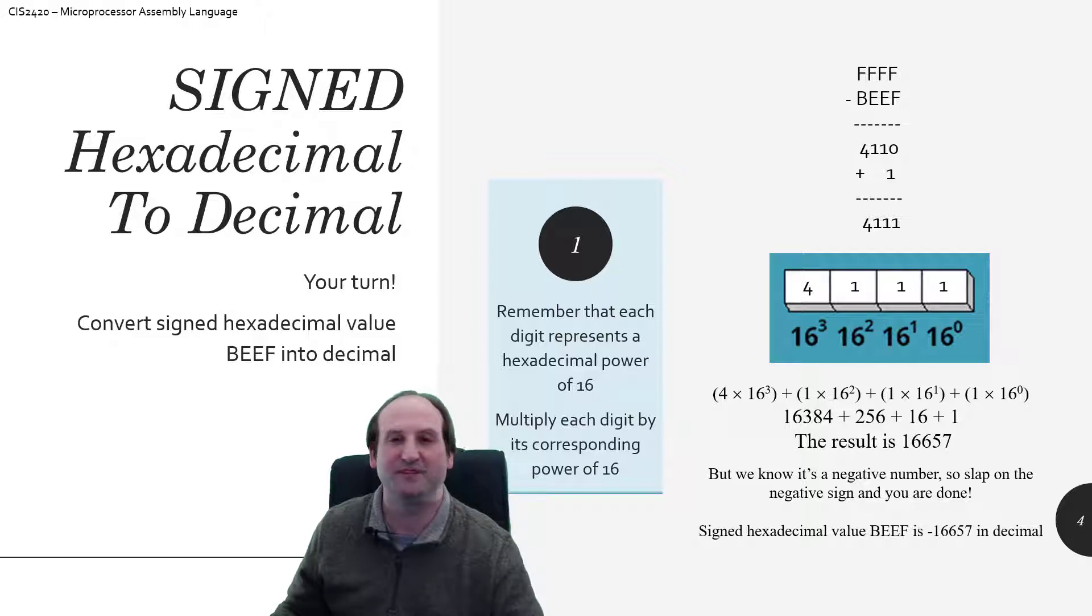So 15 minus 15 is 0. 15 minus 14 is 1. 15 minus 14 is 1. And 15 minus 11 is 4. So I get 4, 1, 1, 0 as the base result.